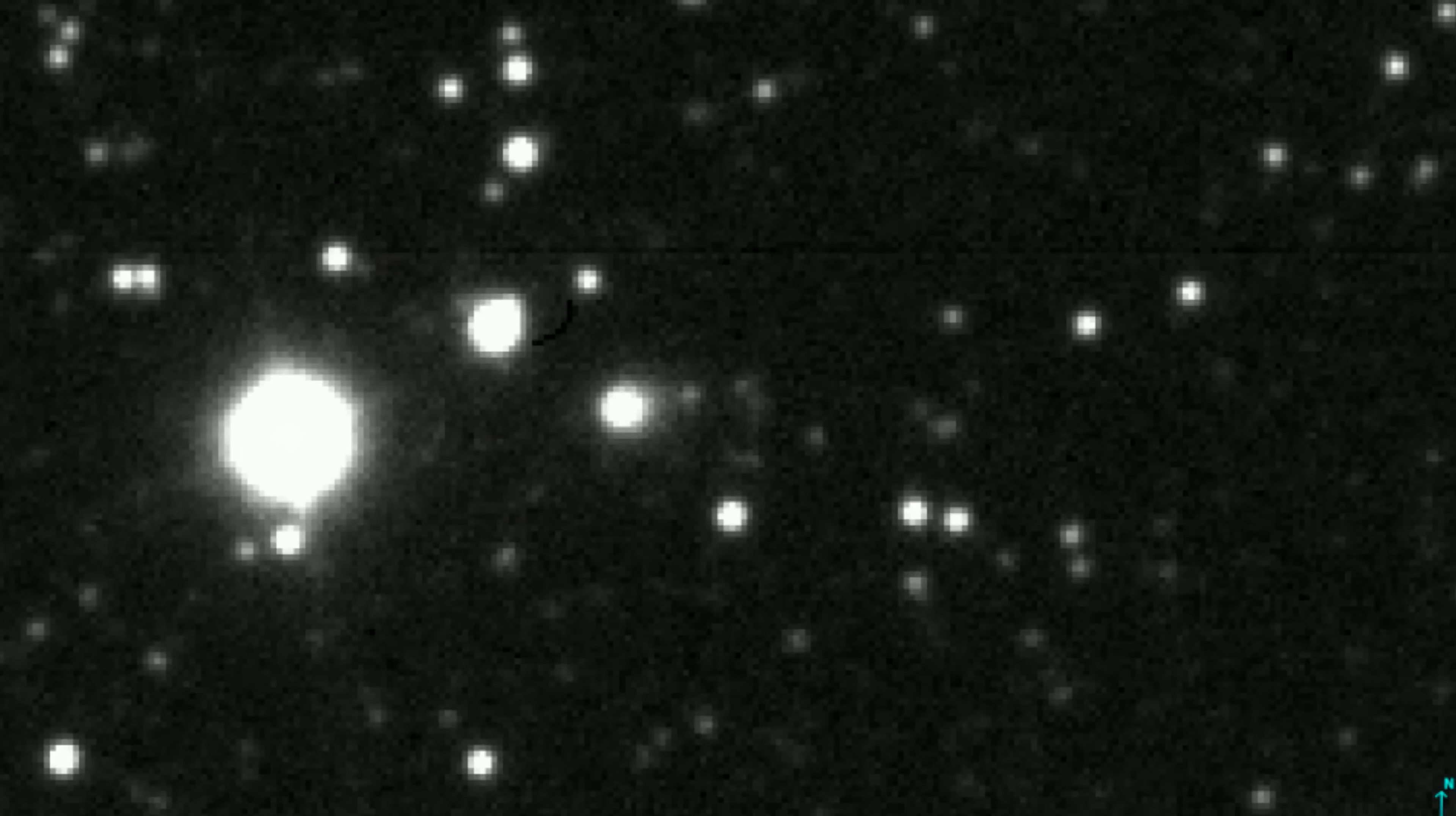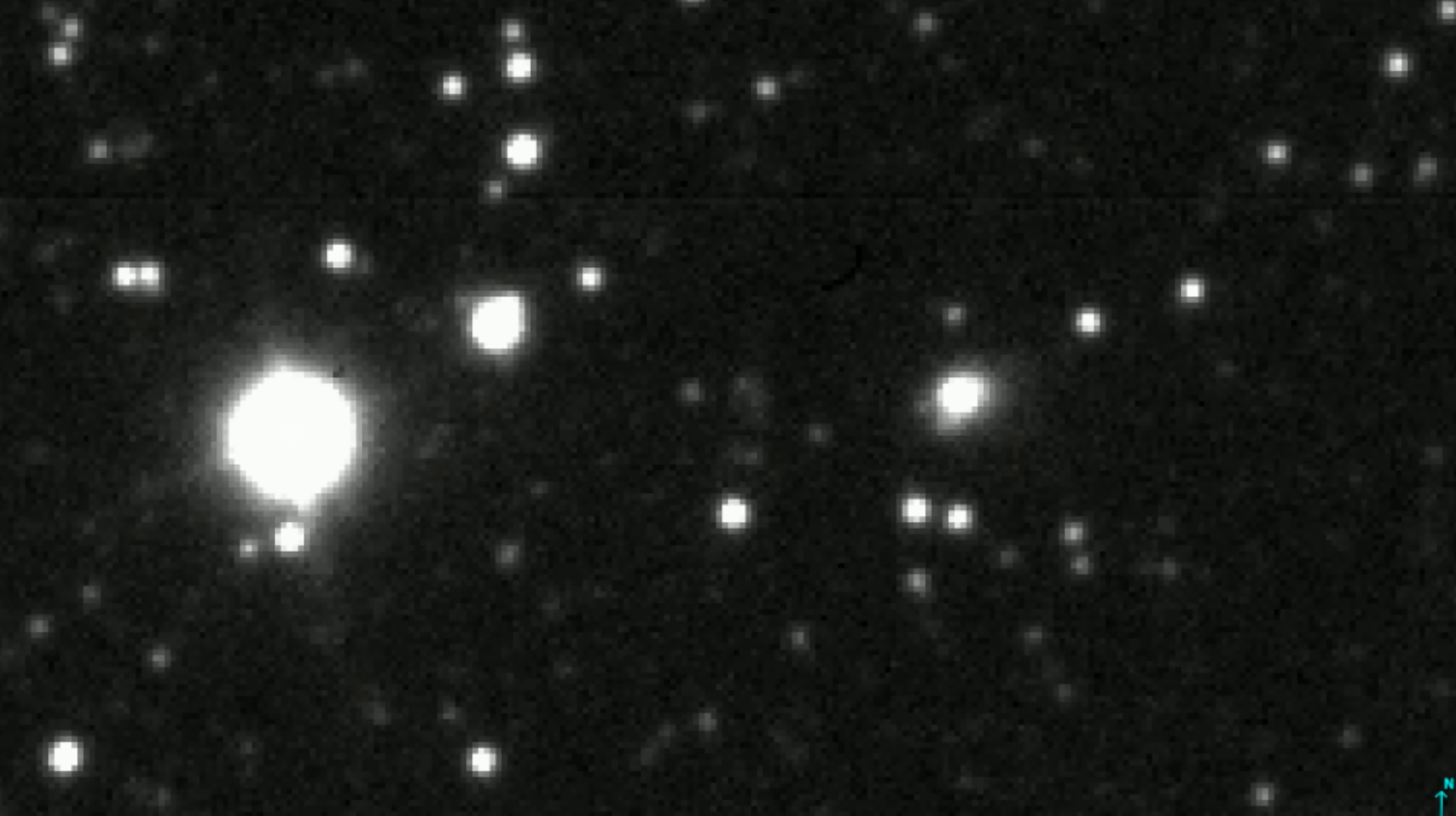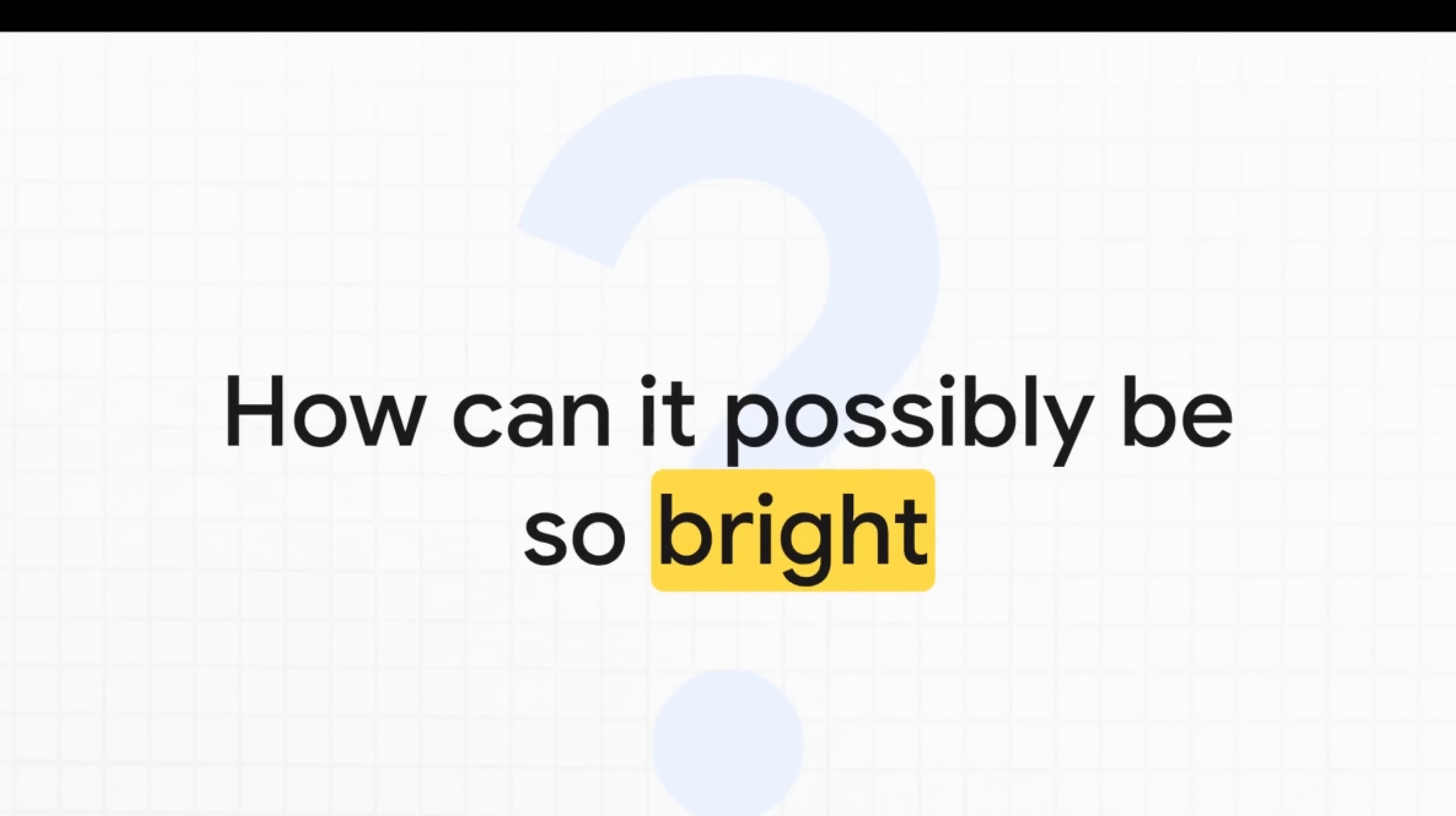The object is incredibly far away from us, yet it's shining with an intensity that just doesn't make any sense for a typical comet of its expected size. And this chart just puts the scale of the problem into perspective. When we compare 3i Atlas to our last interstellar visitor, the comet 2i Borisov, and we put them at the same distance, Atlas is at least 200 times brighter. That's a huge anomaly that screams for an explanation.